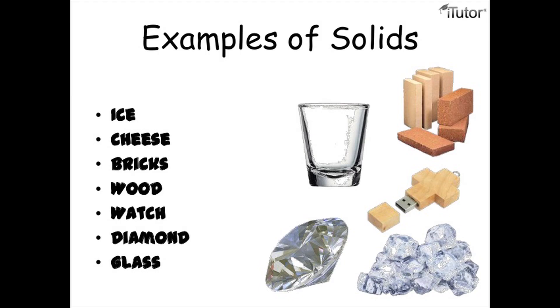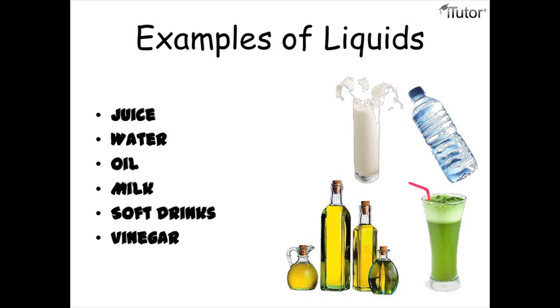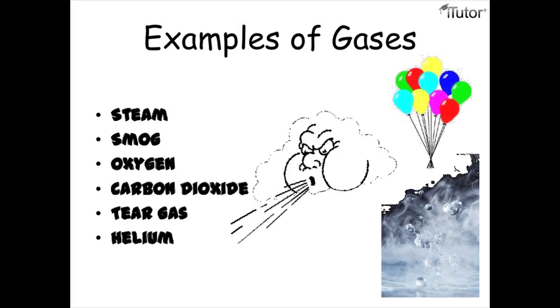There are many examples of each state. Examples of solid may be ice, bricks, wood, car, and glass. Examples of liquid may be juice, water, milk, oil, or tea. Examples of gas may be steam, smog, oxygen, or helium.